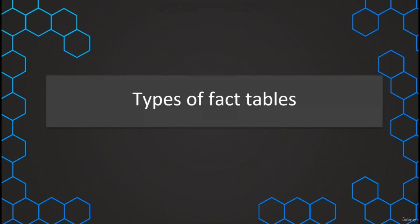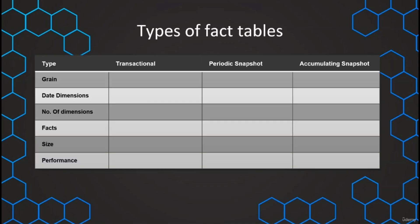In the next few lectures, we need to talk about the three different types of fact tables. Luckily, there are only these three different types. So we have transactional, periodic snapshot, and accumulating snapshot fact tables. In the next three lectures, we are going to talk about these different types and what is specific about them.